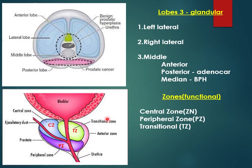This diagram shows the various functional zones of the prostate: the central zone, the peripheral zone, and the transitional zone. Importantly, the transitional zone is the site of origin of BPH, whereas the peripheral zone is the site of origin of the majority of prostatic cancers.